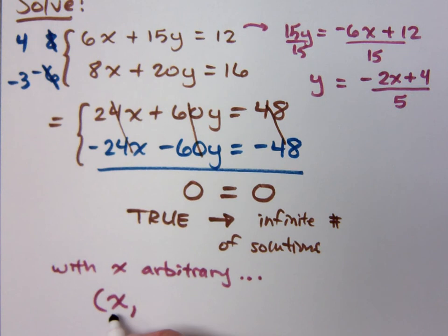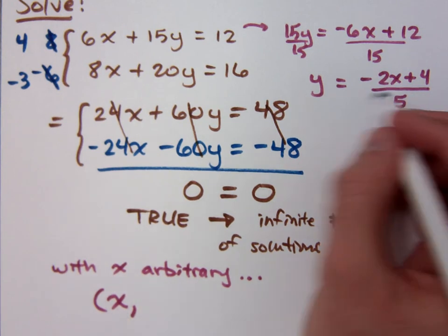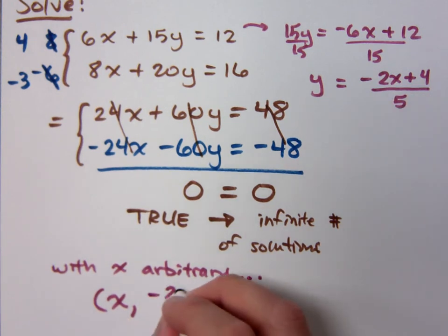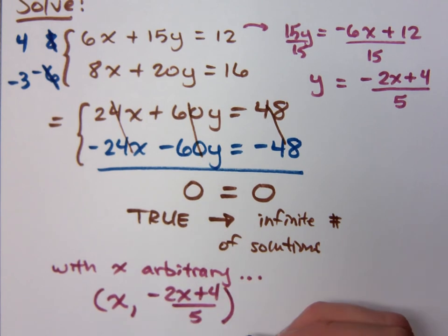That means for any ordered pair that's a solution here, if you know what x is, then you know what y is, because y is going to be negative 2x plus 4 divided by 5. So this will be your solution set right here. Any of these guys. x can be any real number, and you plug that in, you've got to get a point.